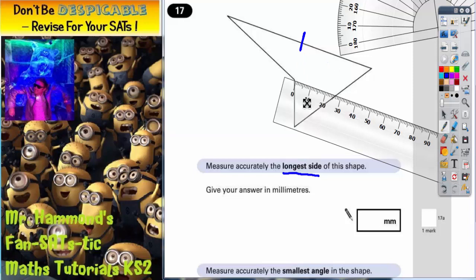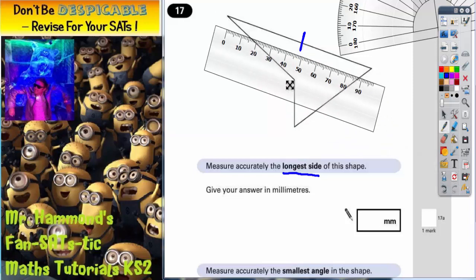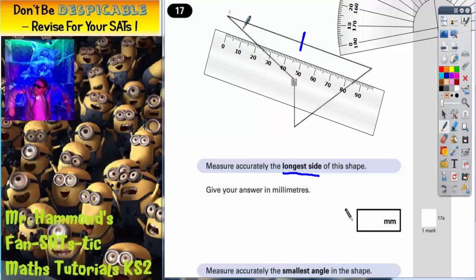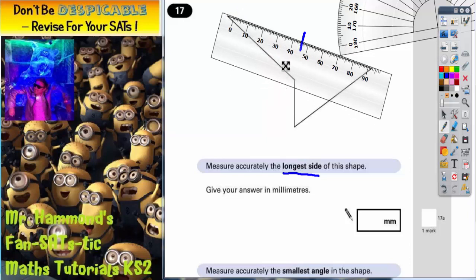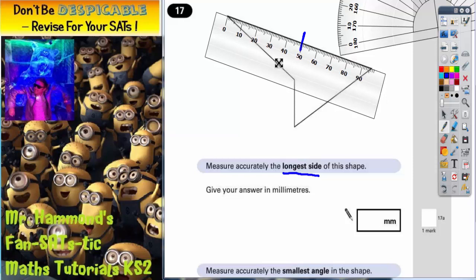So what we need to do now is bring our ruler in. Make sure that the zero is on the end of the line. If you do that, that's no use because it's not on the end. So be as accurate as you can.